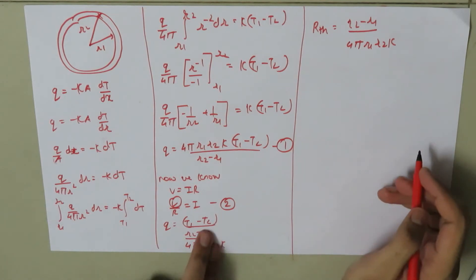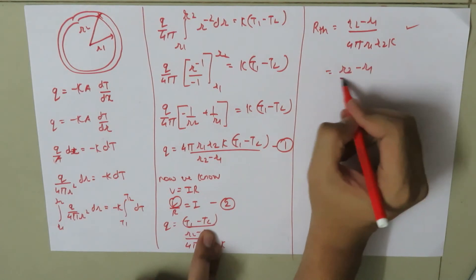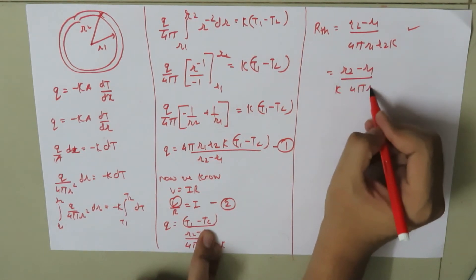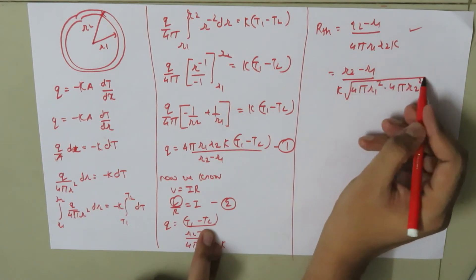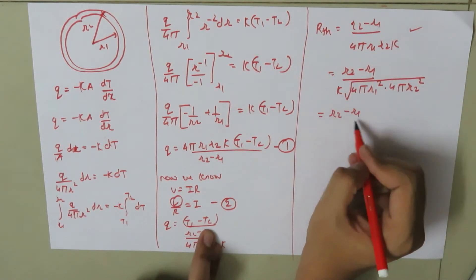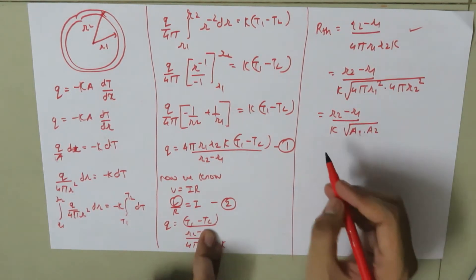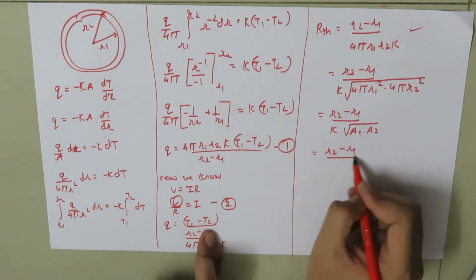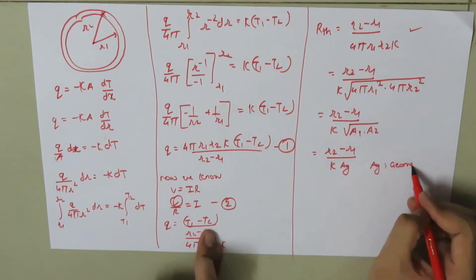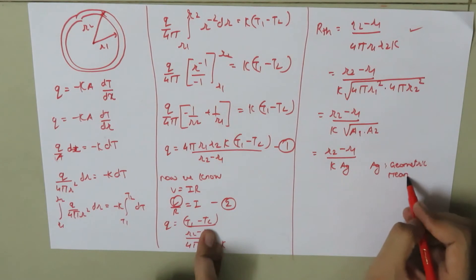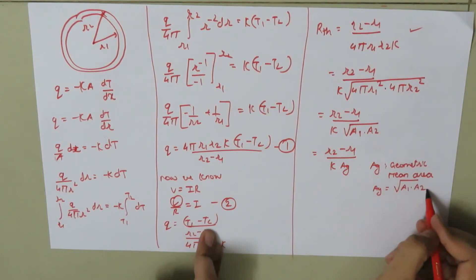We can rewrite the thermal resistance as (R2 minus R1) divided by K times the square root of (4π R1² times 4π R2²), which equals (R2 minus R1) upon K times the geometric mean area A_G, where A_G is equal to the square root of A1 times A2.